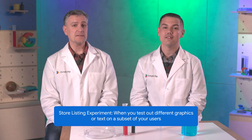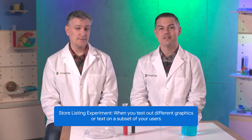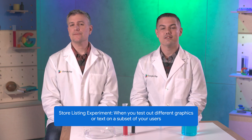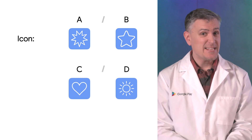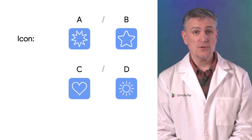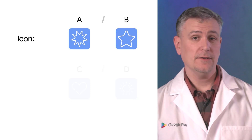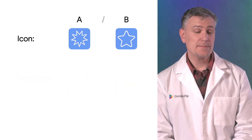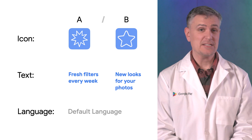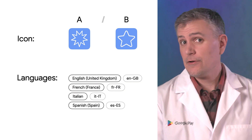A store listing experiment is when you test out different graphics or text on a subset of your users. It's a way to perform an A, B, C, D test to experiment with graphics like your app icon in your default language, or experiment with graphics and text in your default language and in some additional locales.